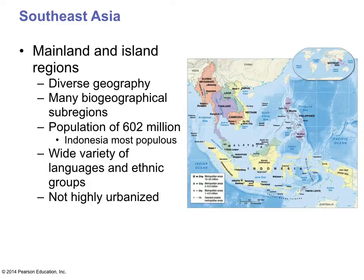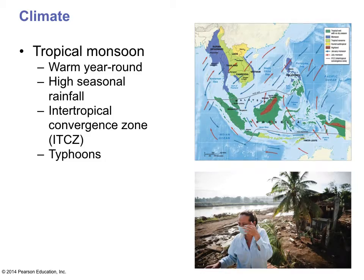There is a lot of diversity, with a population of about 602 million people, Indonesia being the most populous. You'll find a large variety of languages and ethnic groups, and it's rather rural — not highly urbanized. The region suffers and benefits from the tropical monsoon, the wet monsoon, which provides warm year-round conditions with seasonal rainfall and also produces typhoons, which are somewhat the opposite of the hurricanes we get in this part of the world.